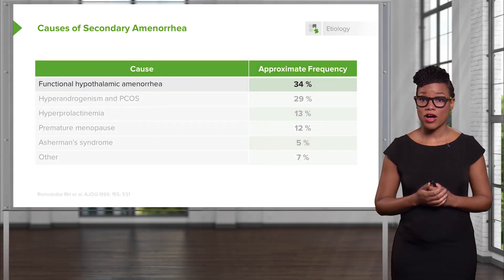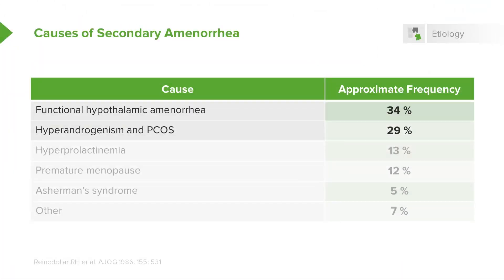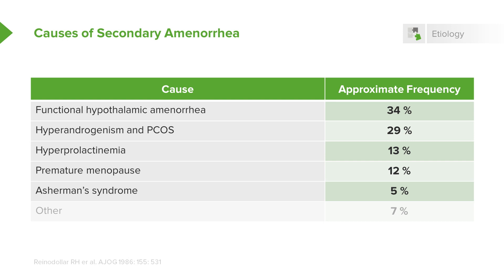There are more causes, but let's review the major ones. Functional hypothalamic amenorrhea is the most common cause of secondary amenorrhea. Hyperandrogenism and polycystic ovarian syndrome is second. Hyperprolactinemia is third. Premature menopause or ovarian insufficiency is fourth. Asherman syndrome is fifth. There are other uncommon causes, but for the USMLE, focus on remembering the above.